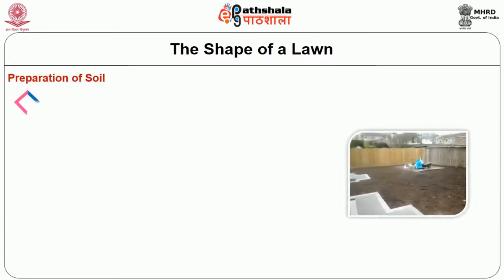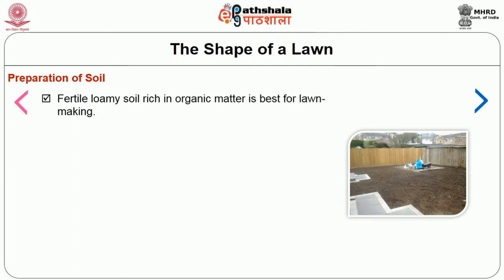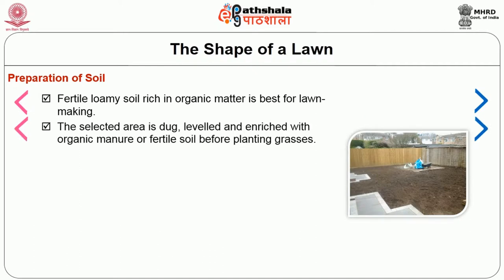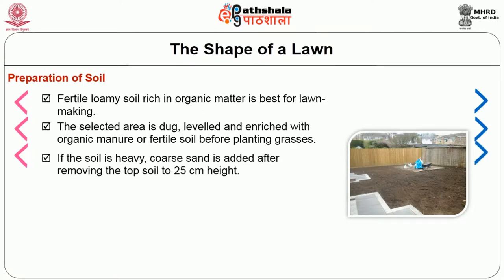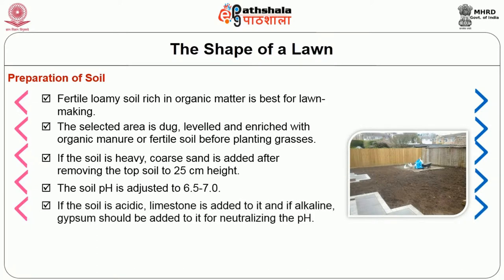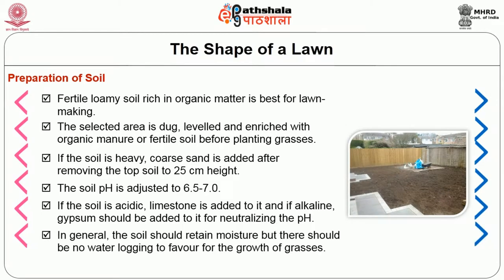Second is preparation of soil. Fertile loamy soil rich in organic matter is best for making lawn. The selected area is dug, leveled and enriched with organic manure or fertile soil before planting the grasses. If the soil is heavy, coarse sand is added after removing the top soil to 25 cm height. If the soil is acidic, limestone is added to it, and if alkaline, gypsum should be added to neutralize the pH. The soil should remain moist but there should be no waterlogging for the growing of grasses. Therefore, adequate drainage is essential.